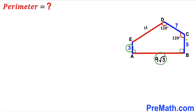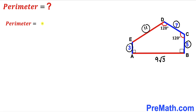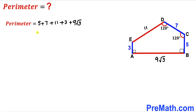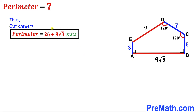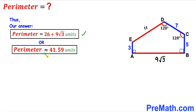We have now figured out all five side lengths of this pentagon. The perimeter is the sum: 5 plus 7 plus 11 plus 3 plus 9 times the square root of 3, which gives us 26 plus 9√3 units. That is approximately equal to 41.59 units, and that's our final answer. Thanks for watching — please subscribe for more exciting videos!